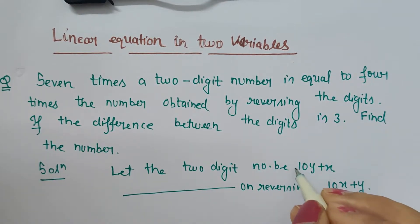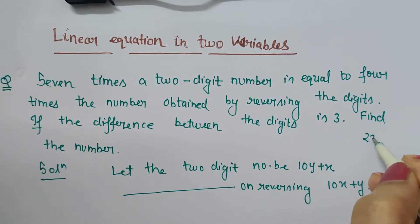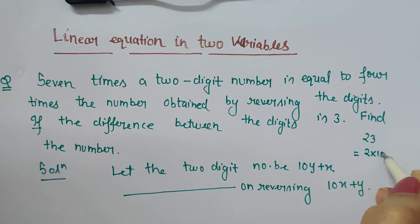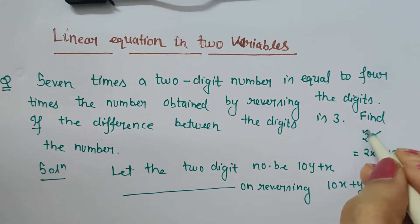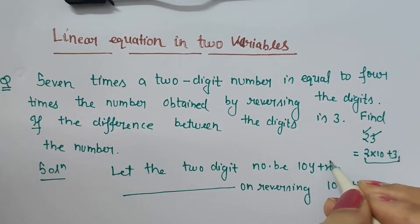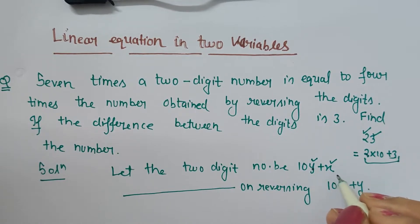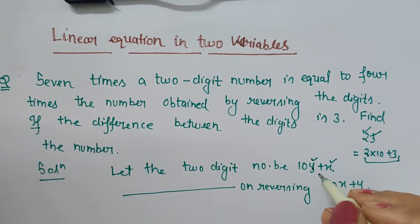As we know, any two-digit number can be written in this expanded form. Like 23 can be written as 2 into 10 plus 3. So here unit digit is 3 and at tens place we have 2, so 2 into 10. In the same manner we are not aware what is the units digit and tens digit, so in the place of 2 we have y and in the units place we have x. 10y plus x is the general form.